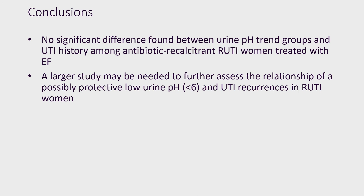In conclusion, our study was unable to find a significant difference between urine pH trend groups and UTI history amongst women treated with electrofulguration for recurrent UTIs. Nevertheless, the study highlights the continued need to study the interaction between urine pH and UTIs in a larger group in the future, in order to determine if urine pH could be an adequate target of intervention for recurrent UTIs.